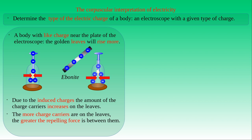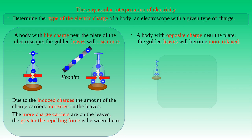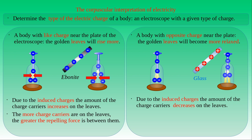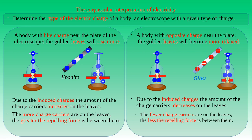If we bring a positively charged glass rod near the plate of the negatively charged electroscope, we find that the gold leaves become more relaxed. In general, bringing a body with opposite charge near the plate of a charged electroscope causes the gold leaves to become more relaxed. Due to the induced charges, the amount of negative charge carriers decreases on the leaves, so the repelling force between the stripes is less.